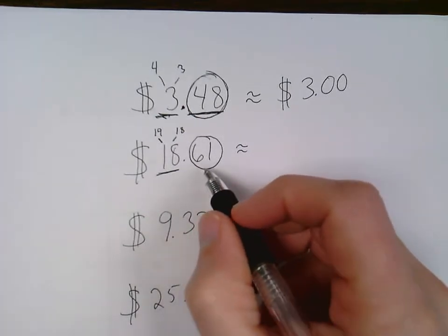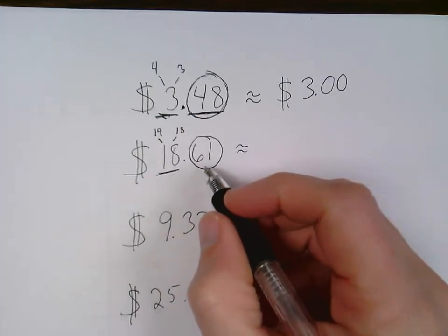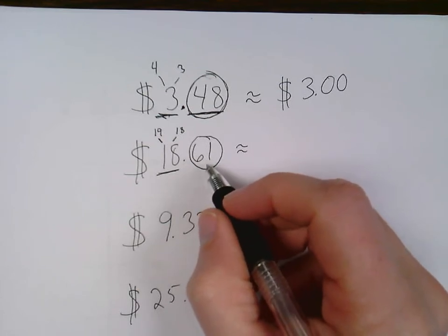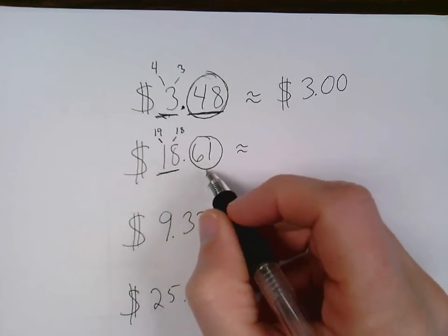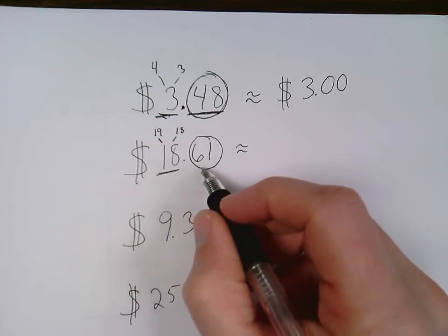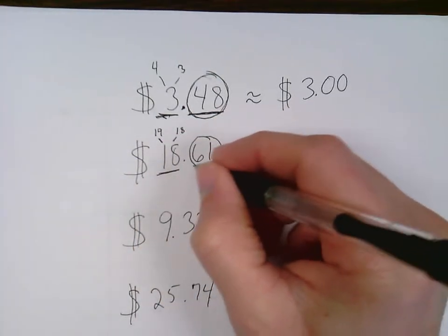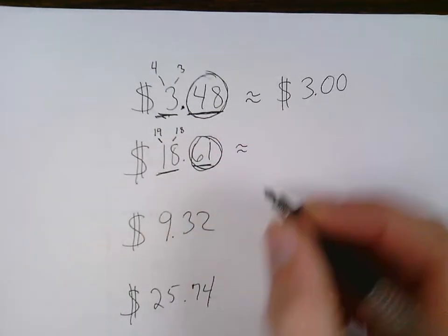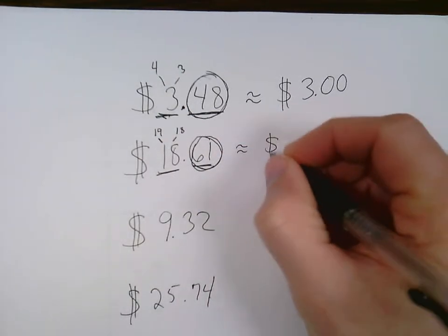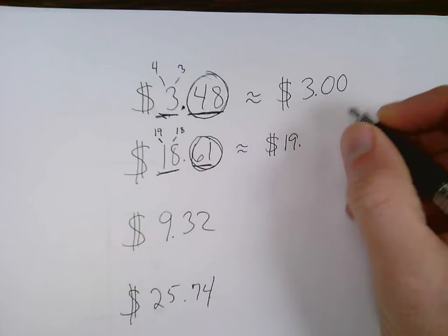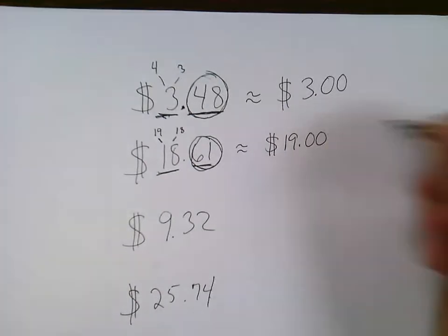Once again, the circled digit will tell us what we need to do. If the circled, I should say digits, if the circled cents is above a 50, so if there's more than 50 cents, the underlined portion will go up. So since the 61 is more than 50 cents, then the 18 is going to become a 19. So $18.61 is rounded to $19.